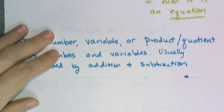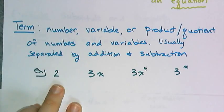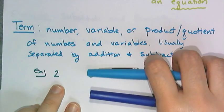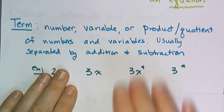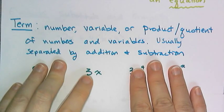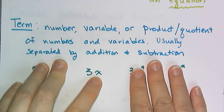So here are some examples of some terms. Two is an example of a term, it's just a number. Then three times X is an example of a term. And remember, if you see a number right next to a variable and there's no operation, there is an implied multiplication there.